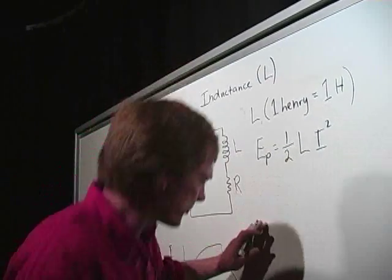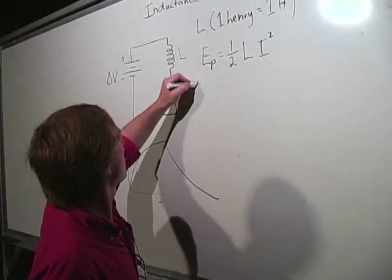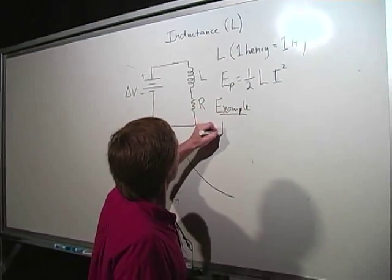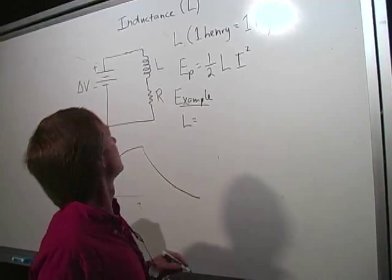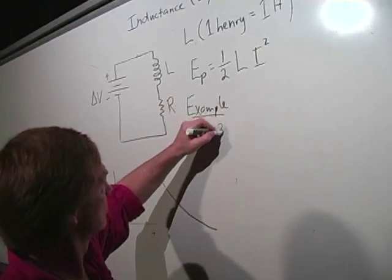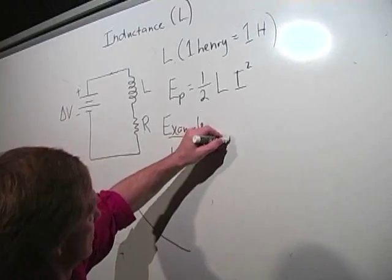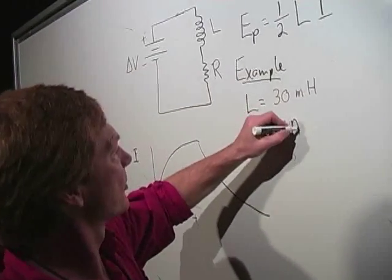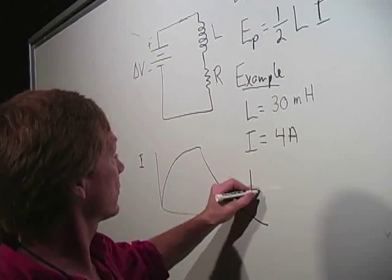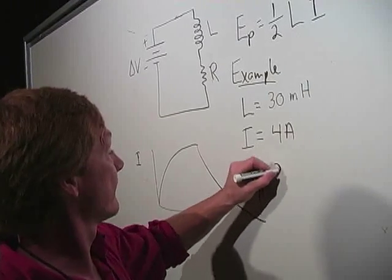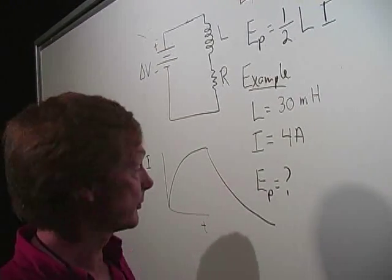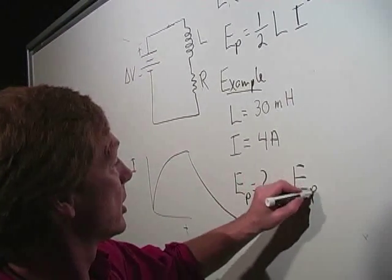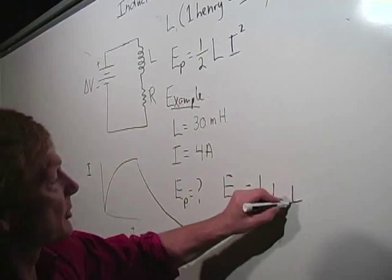So let's do an example. Let's say I've got an inductance of 30 millihenries, and I've got a current of 4 amps. And I want to know, what's the potential energy stored once it gets all up and running?